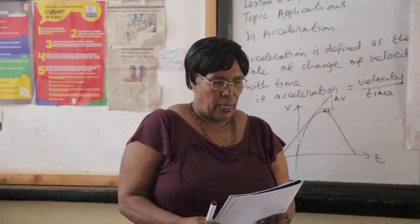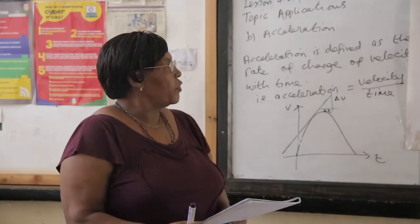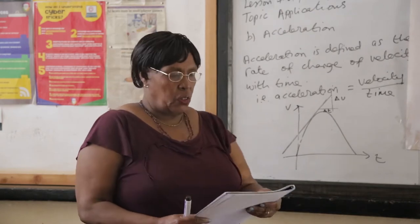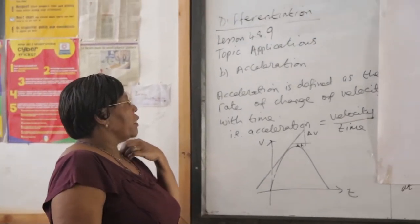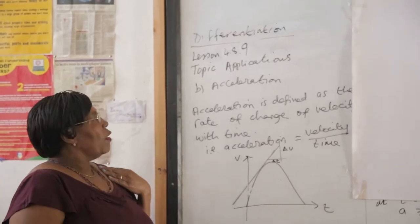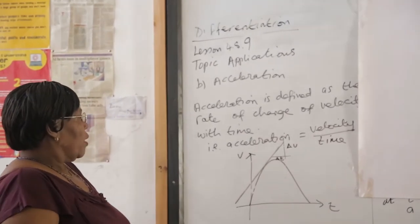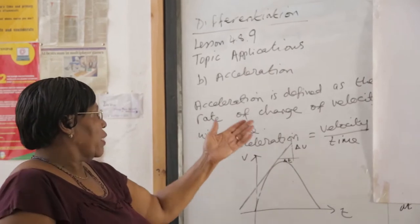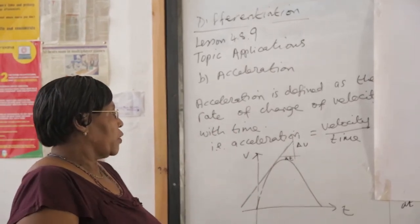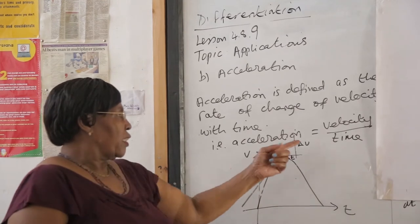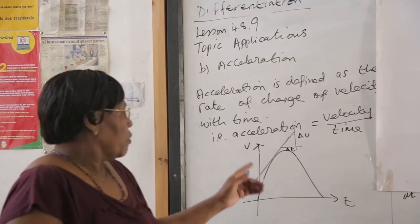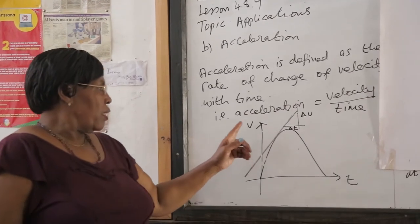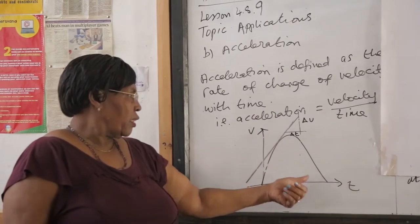Welcome my students. We are still on differentiation and its applications, and right now we want to discuss acceleration as an application of differentiation. Now we know acceleration is defined as the rate of change of velocity with time. That means acceleration is equal to velocity over the time taken. Now from the graph, from the VT graph or velocity time graph...